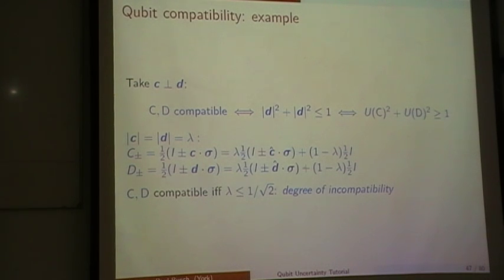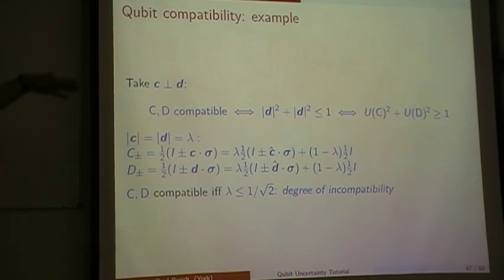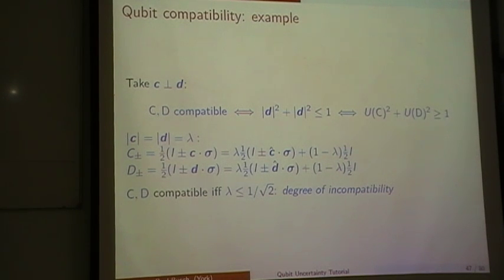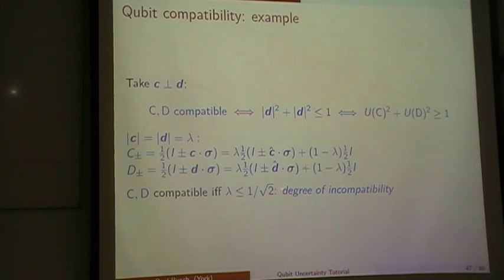Incidentally, that is the starting point for developing a theory of incompatibilities. You can take that as a measure of the incompatibility of two observables. For two-valued observables in Hilbert space, how bad can it get? In two dimensions, lambda being 1 over root 2 is the worst we have to accept. If we take the qubit state space and ask for the amount of incompatibility, we find that lambda has to be no greater than one half to allow compatibility for all observables. So there are pairs of observables that are much more incompatible than we find in two-dimensional Hilbert spaces.